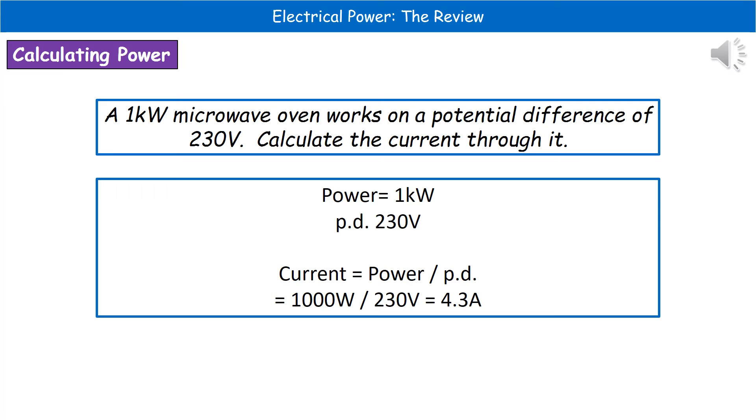Remember one kilowatt is the same as a thousand watts. Then we know that current is our power divided by potential difference once we've rearranged our formula. We can substitute in the values. One thousand watts divided by 230 volts gives us a current of 4.3 amps.